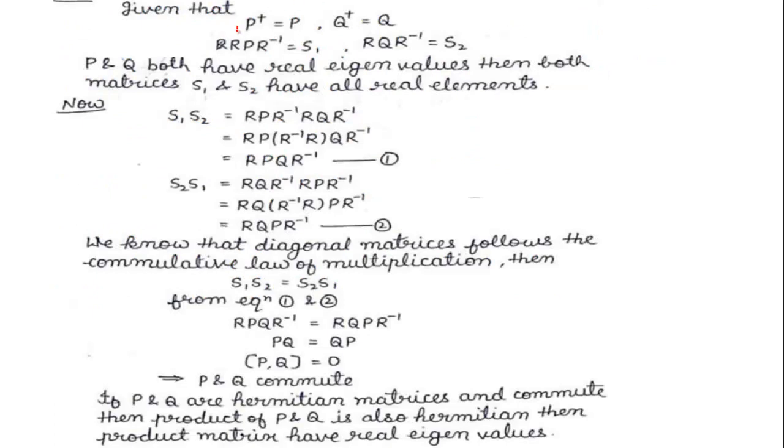We have given that they are Hermitian, so P† = P and Q† = Q. We have this question given that RPR^(-1) = S_1 and RQR^(-1) = S_2.